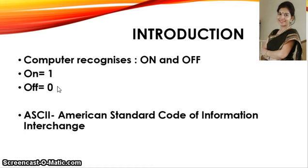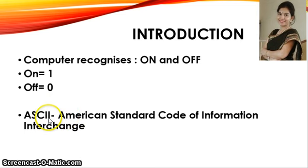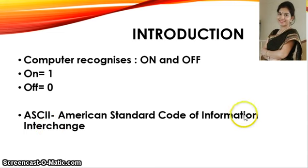When 8 bits are grouped together, they form a byte. Every character in a computer — all the alphabets A to Z, numbers from 0 to 9, or symbols — has an assigned numeric code. This code varies from 0 to 256, and this is known as ASCII — the American Standard Code of Information Interchange.